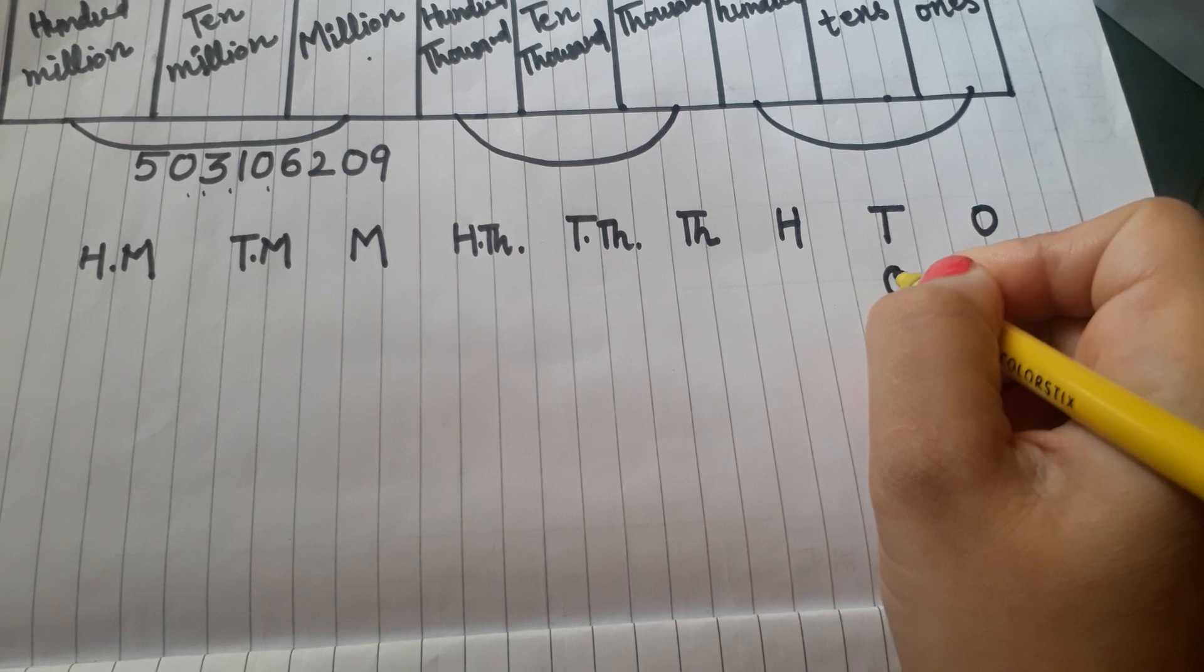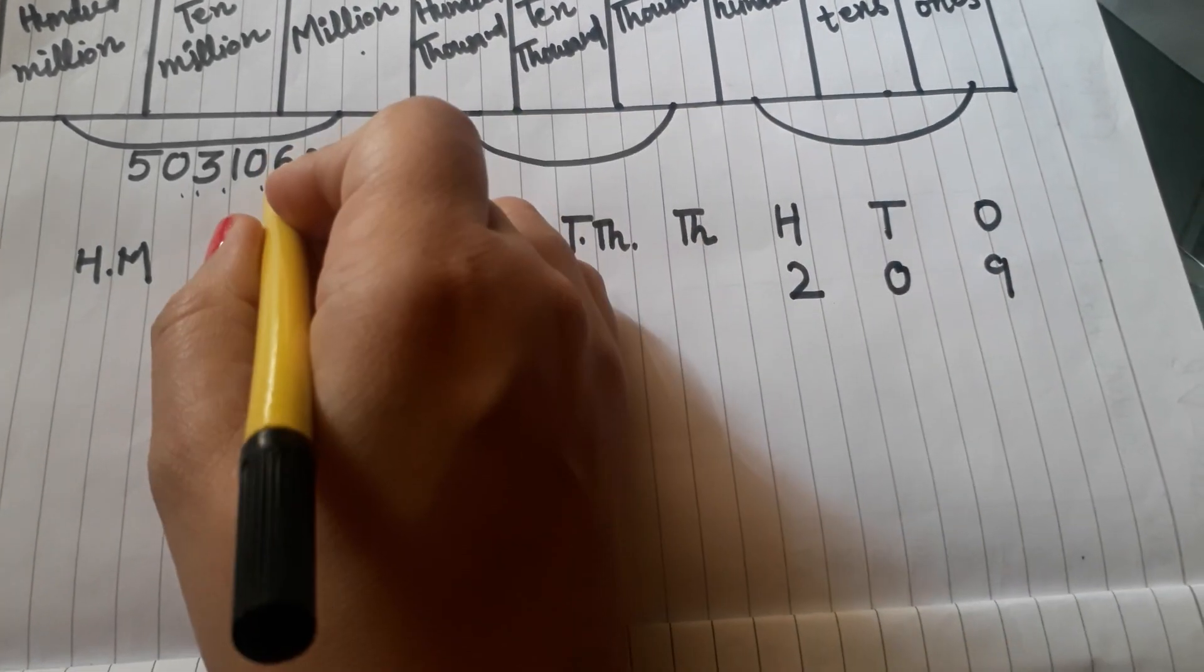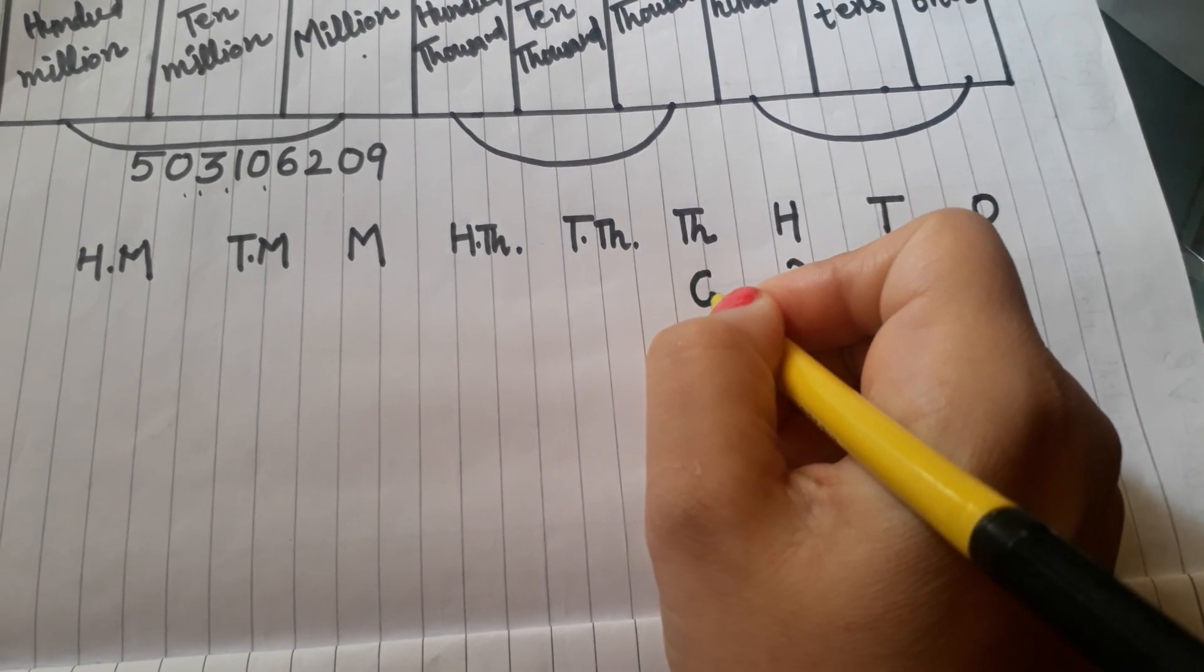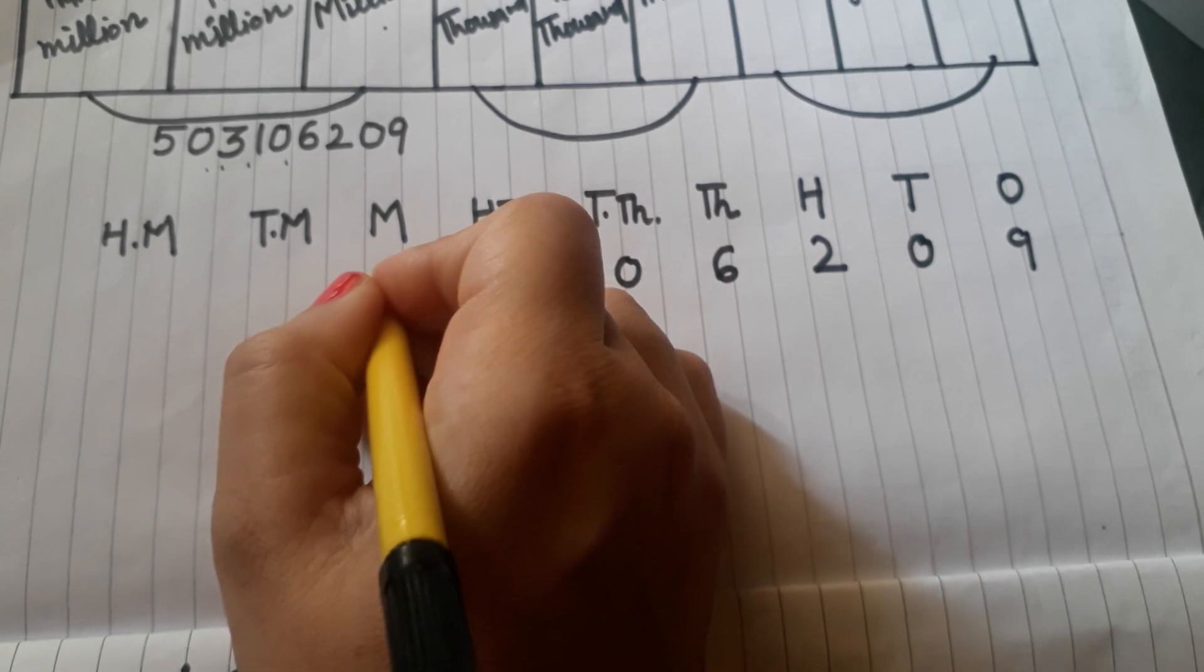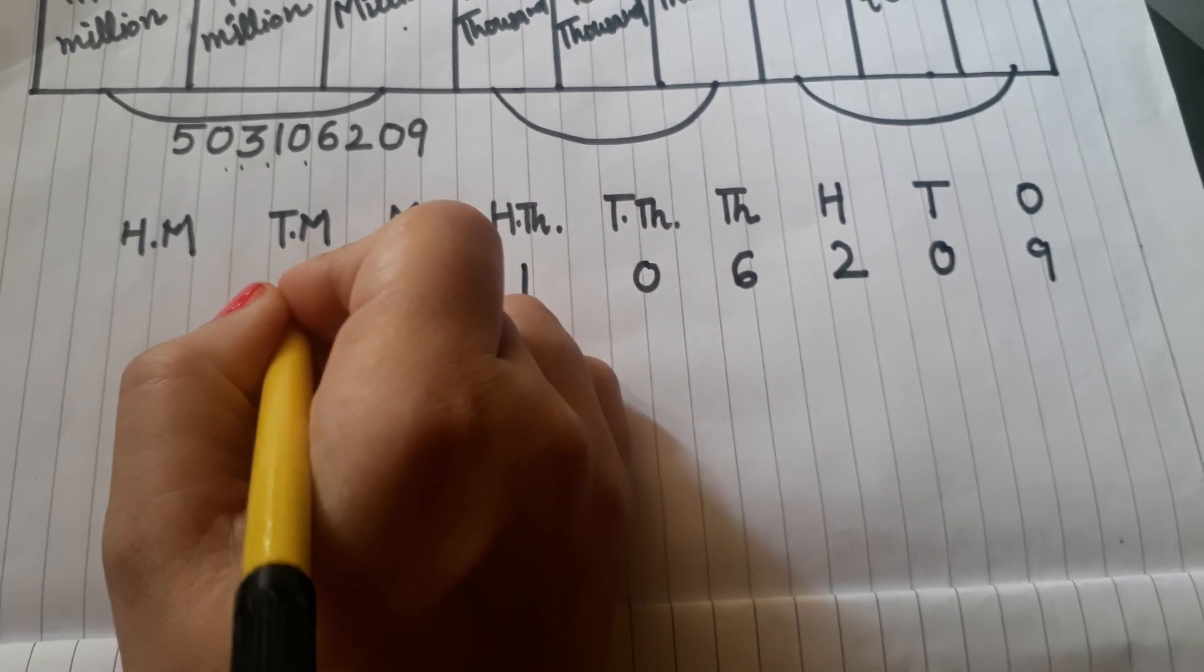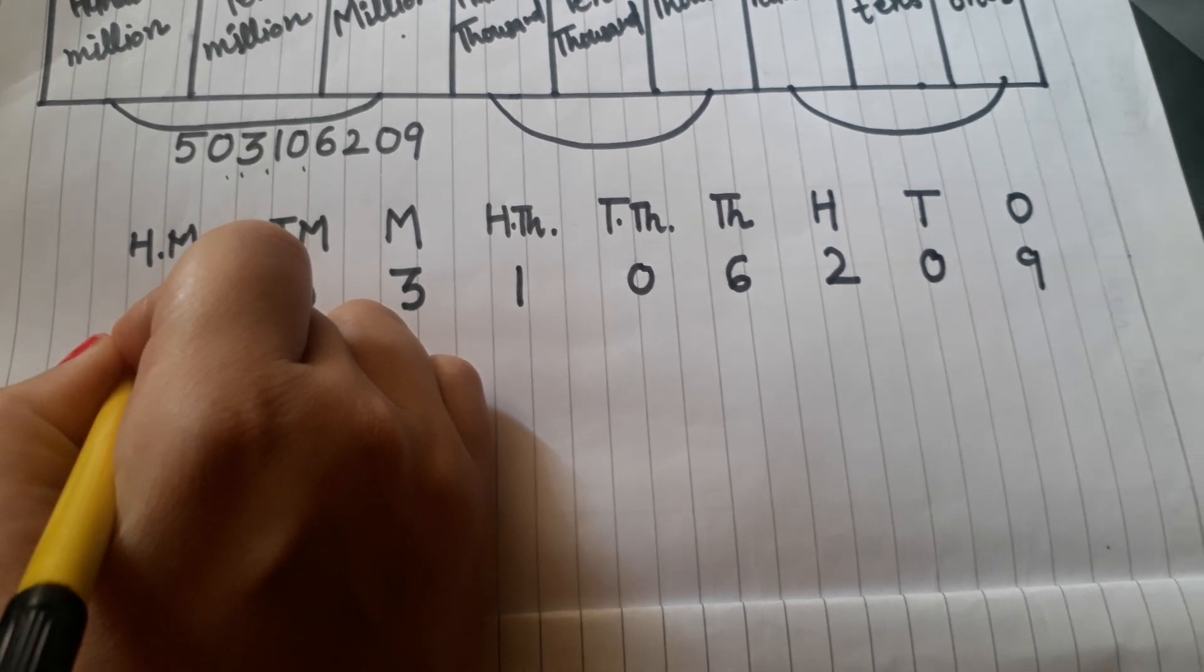Then tens place 0, hundreds place 2, then 6, 0, 1, 3, 0, 5. Now let's put commas.